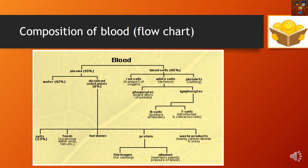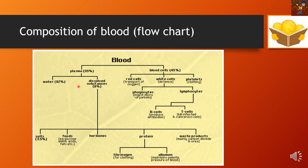The composition of blood is shown here in a flowchart. Blood is made up of two parts: plasma, which is 55 percent, and blood cells, which are 45 percent. So the amount of plasma is higher than the blood cells. Plasma can be further subdivided into 92 percent water and dissolved substances.